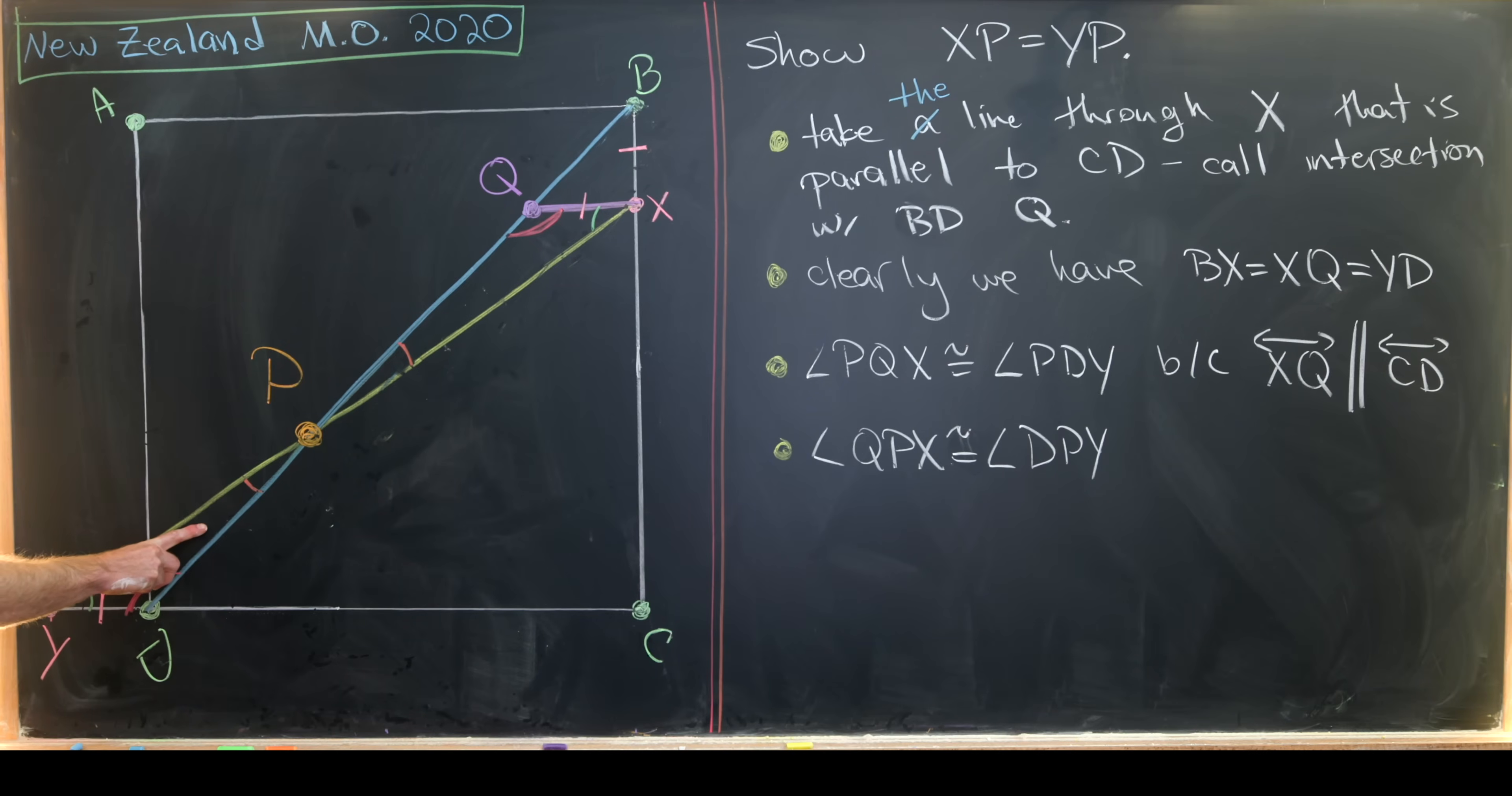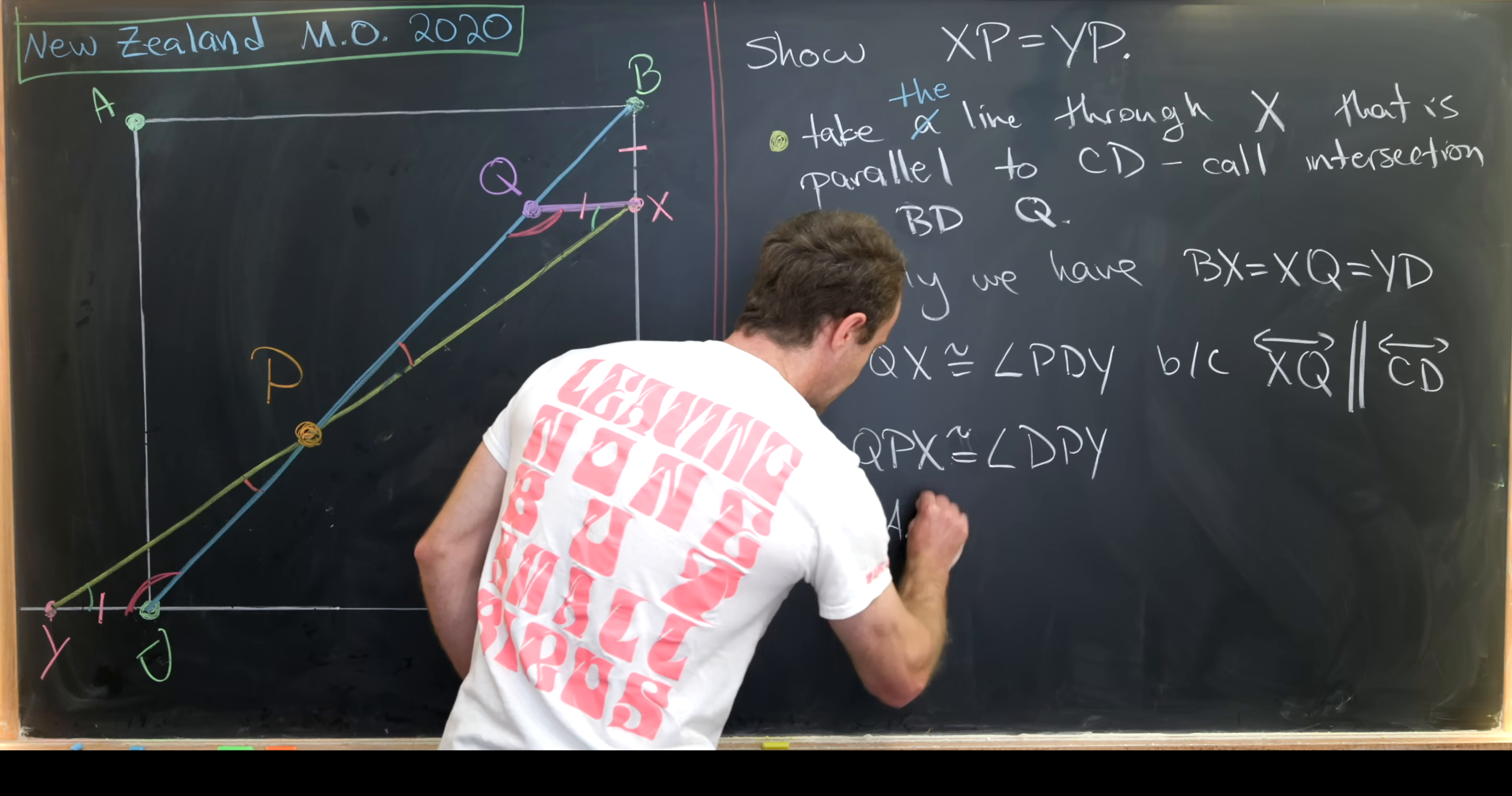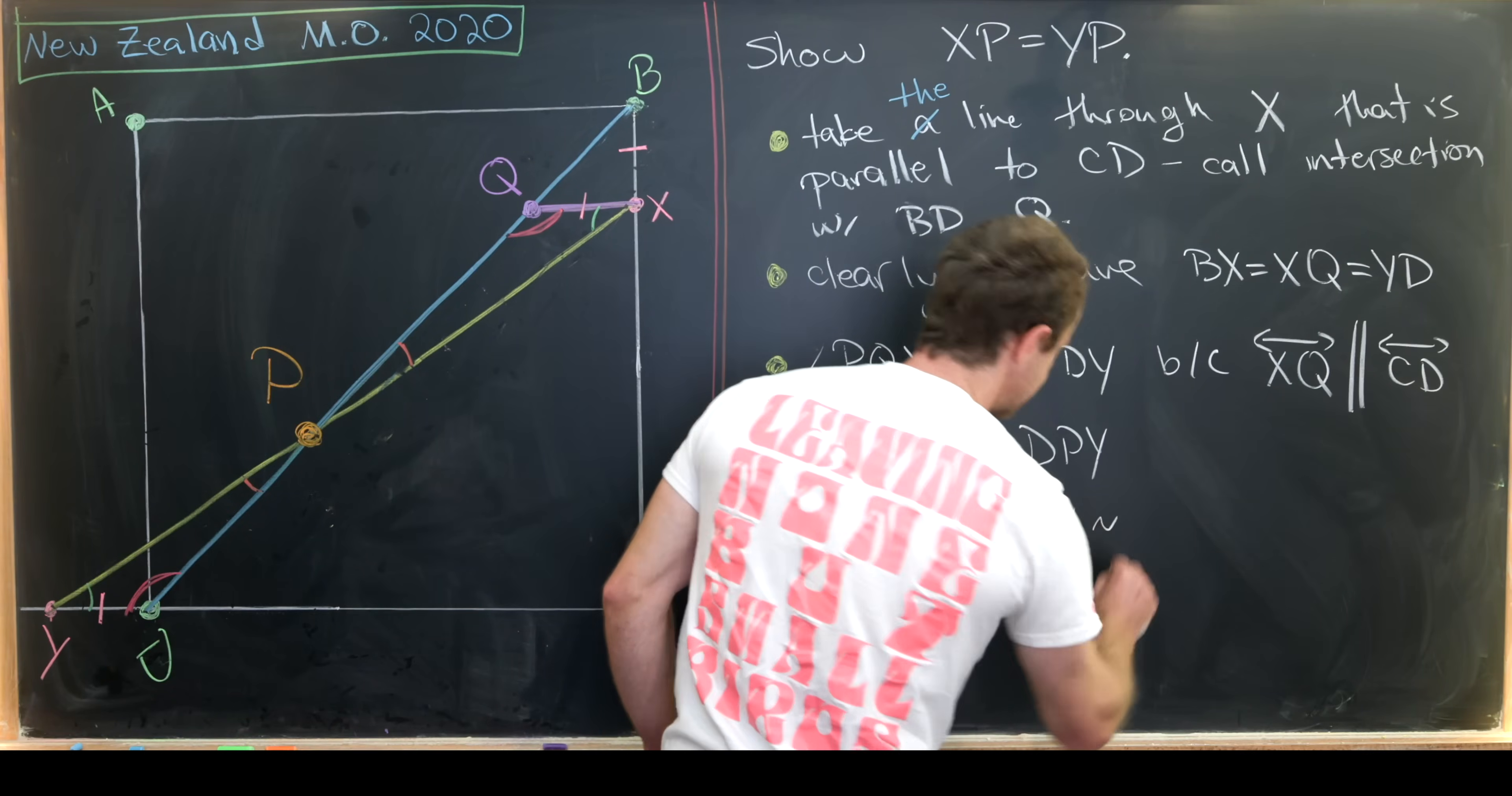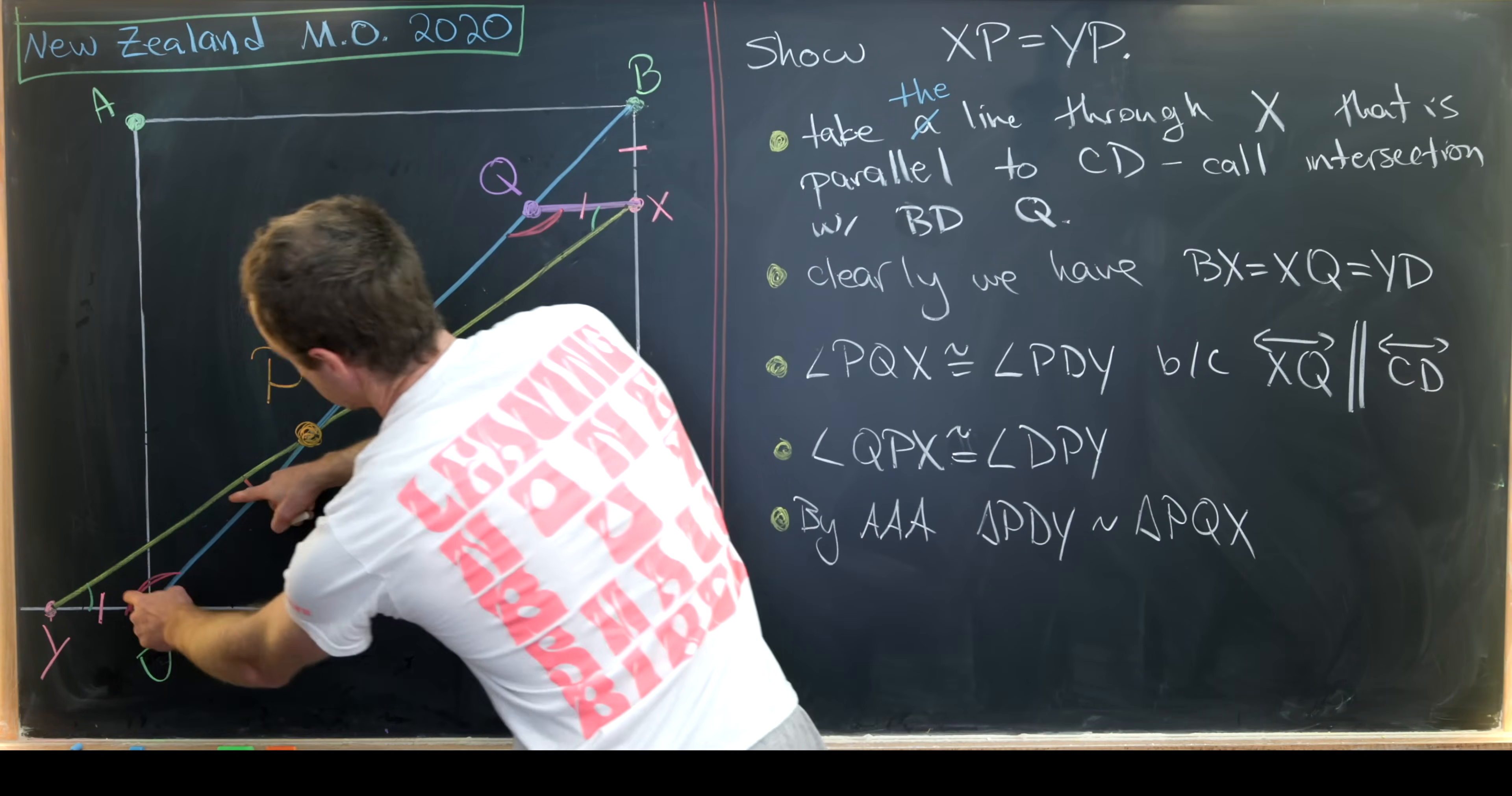So that means we have a triangle here and a triangle here that have the same angle measurements. But if they have the same angle measurements, they are similar by the angle-angle-angle theorem. So let's write that down. So by the angle-angle-angle theorem, we know that triangle PDY is similar to triangle PQX.